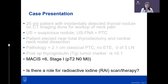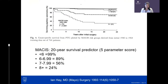For this low-risk patient, data from Ian Hay at Mayo Clinic showed that patients with MESA scores under six have excellent prognosis — the risk of dying from thyroid cancer is very low. These survival curves over 10 to 25 years demonstrate that for low-risk disease, survival is excellent. As disease becomes more advanced or develops distant metastases, prognosis can be reduced.